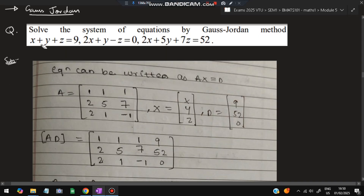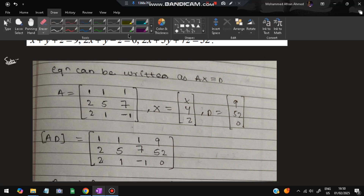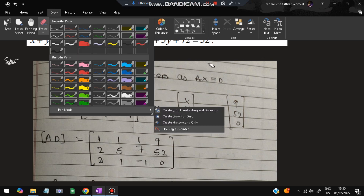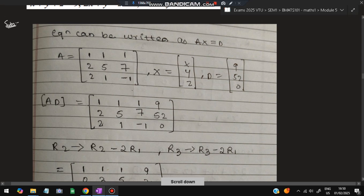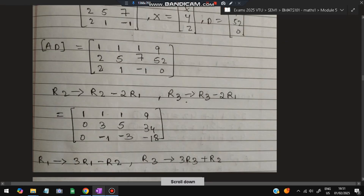Now we solve a system of equations by the Gauss-Jordan method: x + y + z = 9, 2x + y − z = 0, and 2x + 5y + 7z = 52. We write this as A·x = d, where A is the coefficient matrix with rows [1,1,1], [2,1,−1], [2,5,7], x is the column vector [x, y, z], and d = [9, 0, 52]. We form the augmented matrix [A|d].